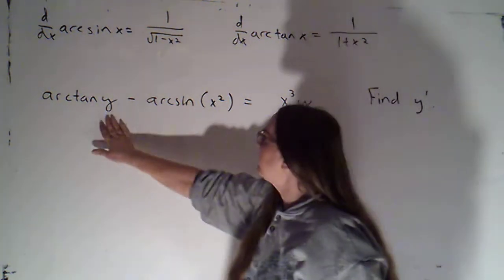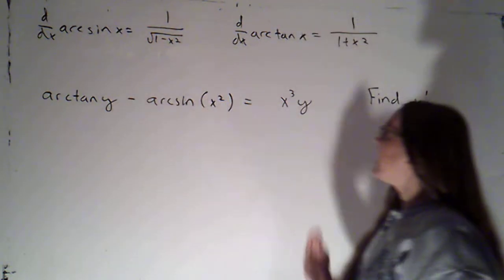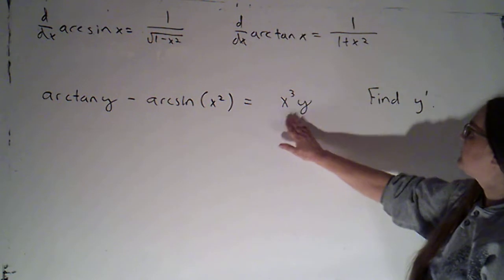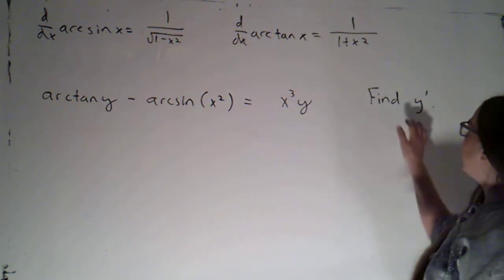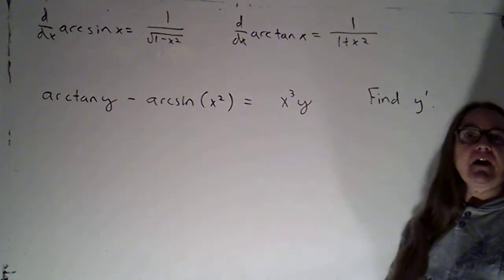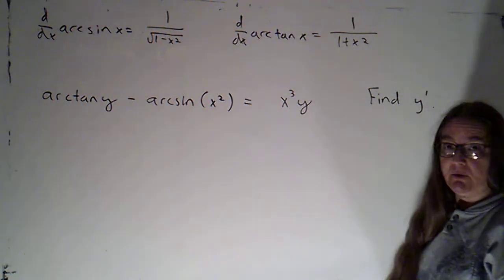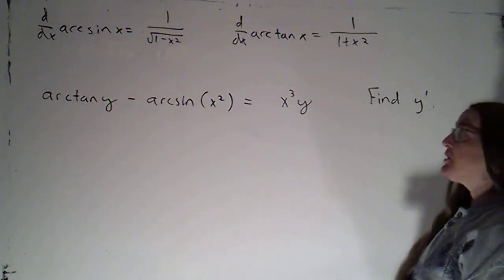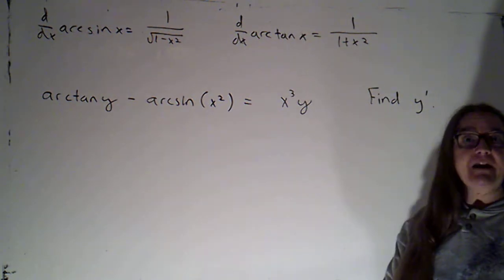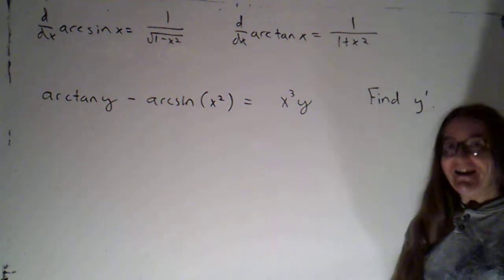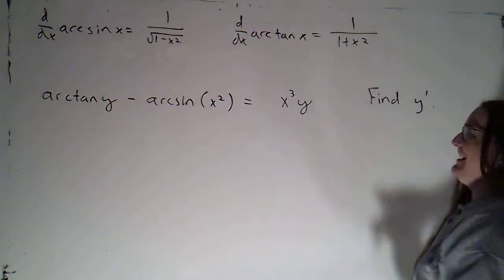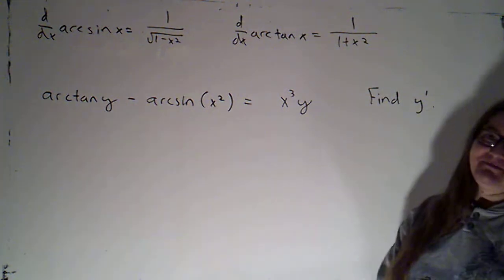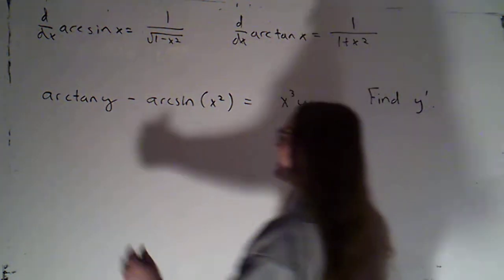So we've got arc tan of y minus arc sine of x squared equals x cubed y, and we're asked to find y prime. I'm definitely not going to solve for y first and then take the derivative — I'm going to use implicit differentiation.